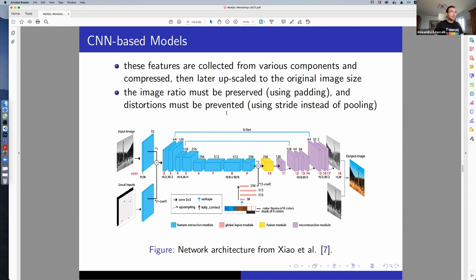Some important things are as follows. You have to keep the image ratio preserved. You cannot modify the image ratio, and you can do that by padding. You must avoid at all costs distortions. Those can be avoided using stride instead of pooling.